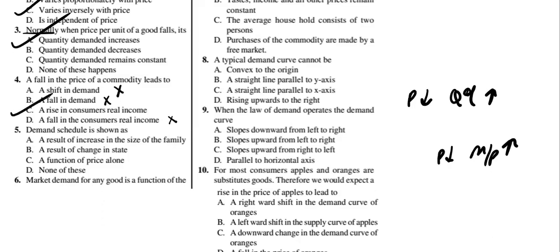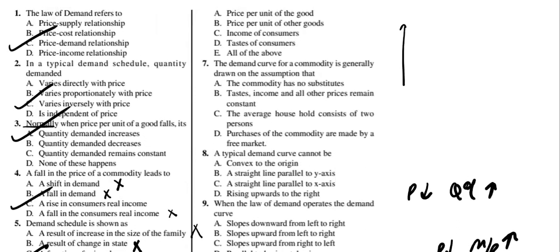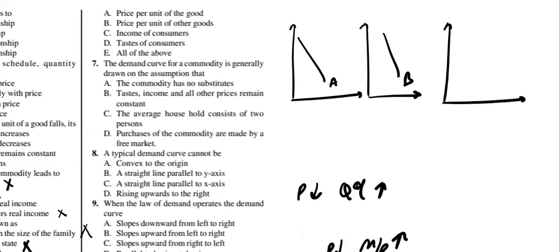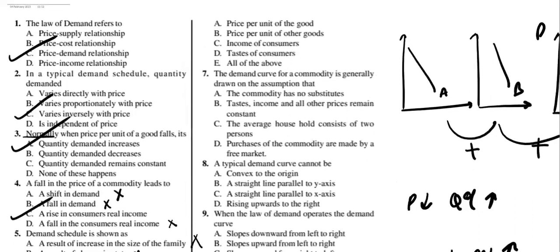Fifth question: the demand schedule is shown as a relationship between price and quantity demanded. The answer is C — it is only a function of price, not a function of family size or other state changes. For market demand, it is simply the sum of individual demands — individual A plus individual B totalled out gives market demand. Market demand is also between price and quantity only.